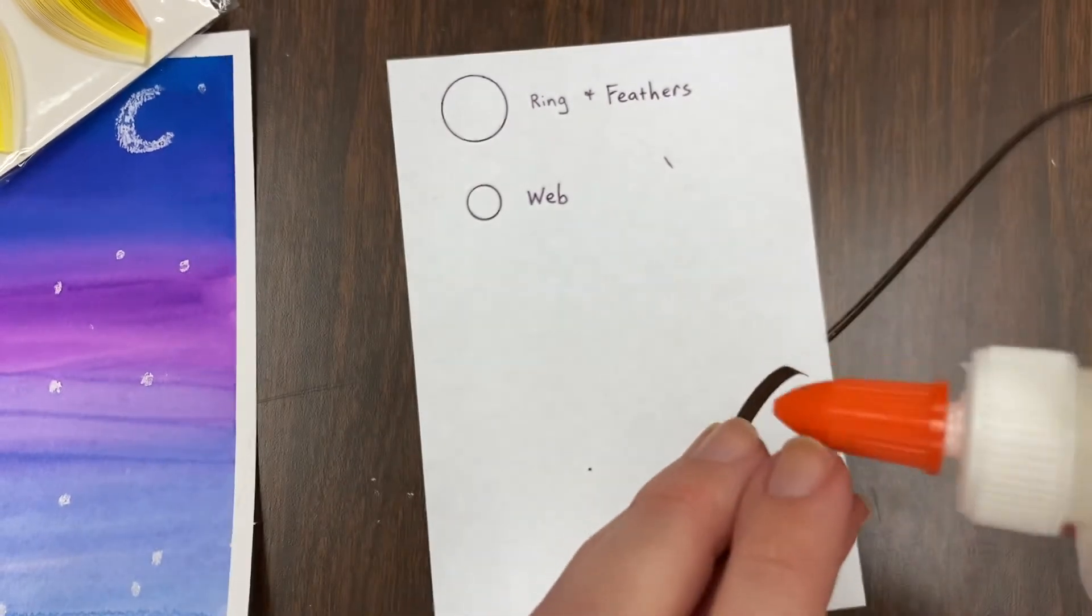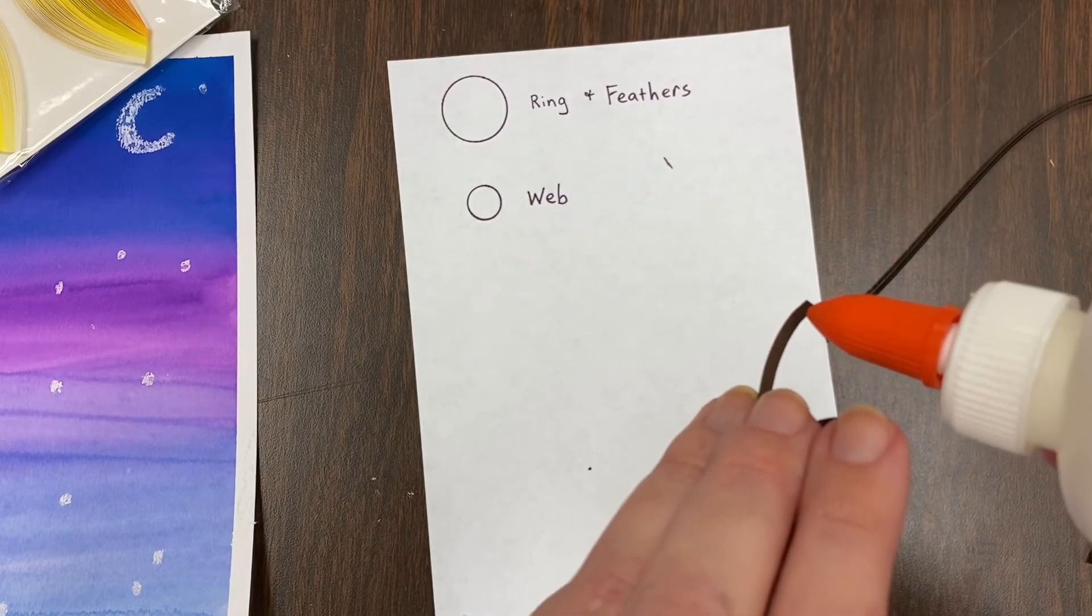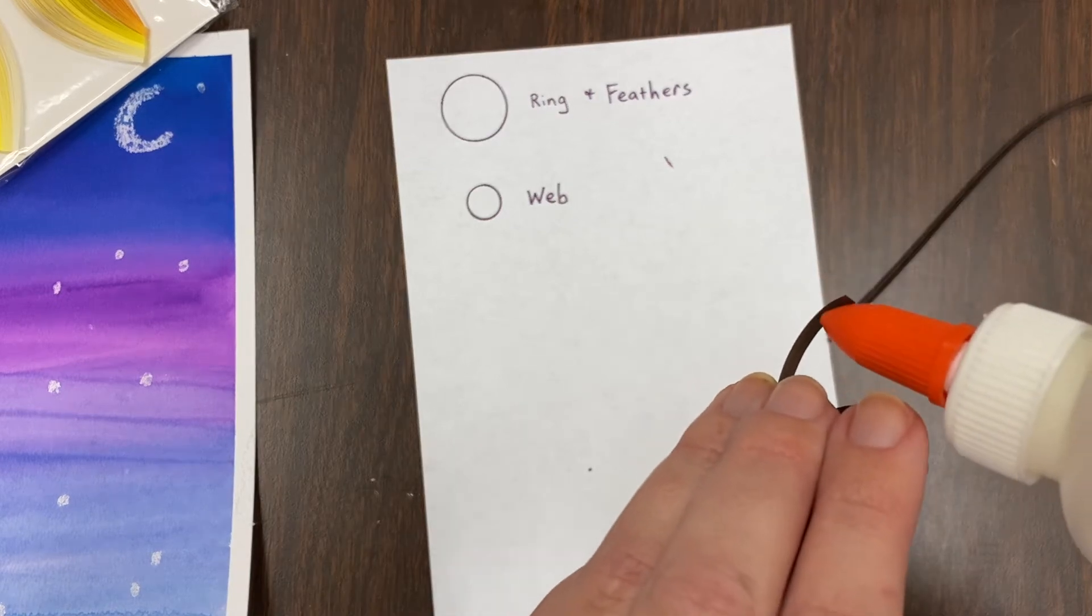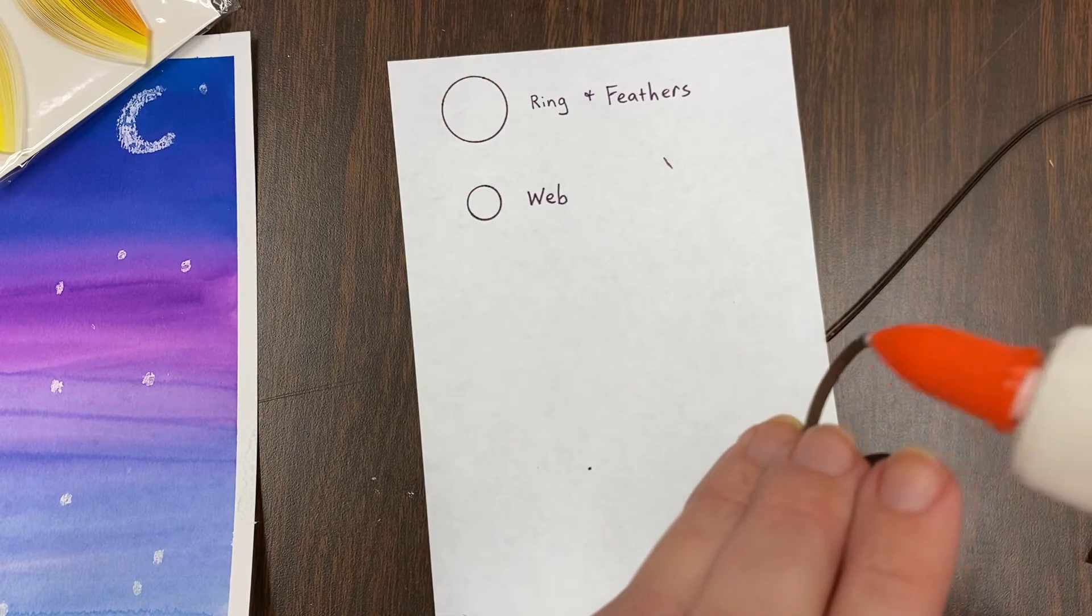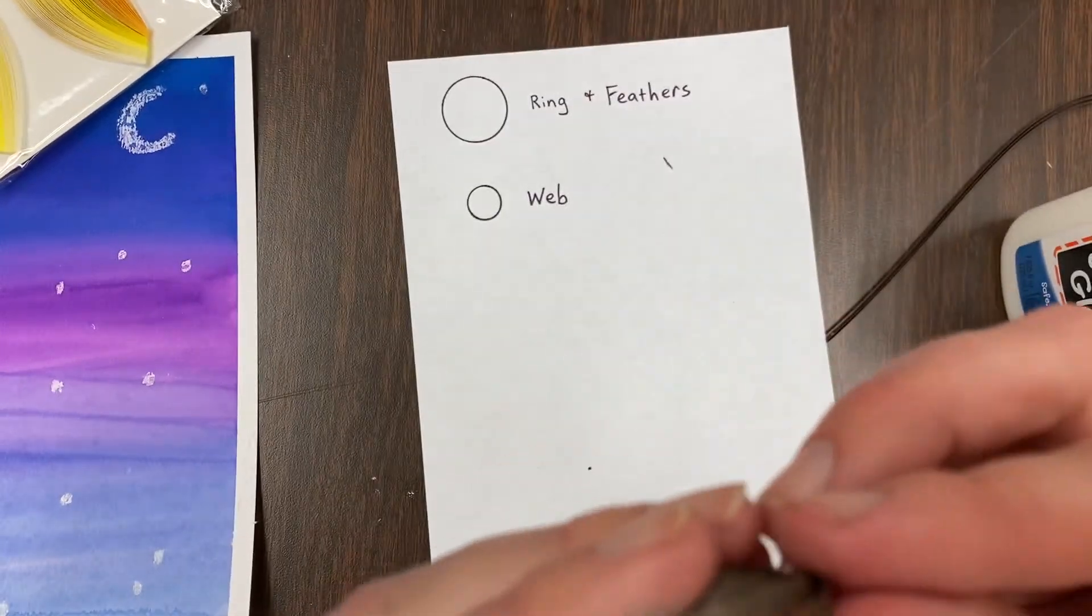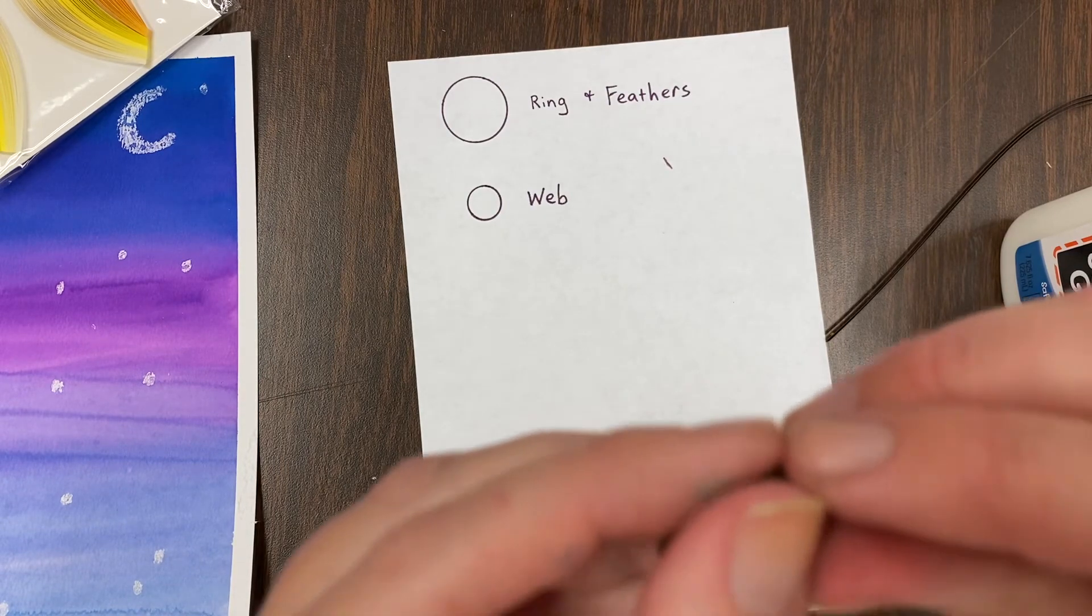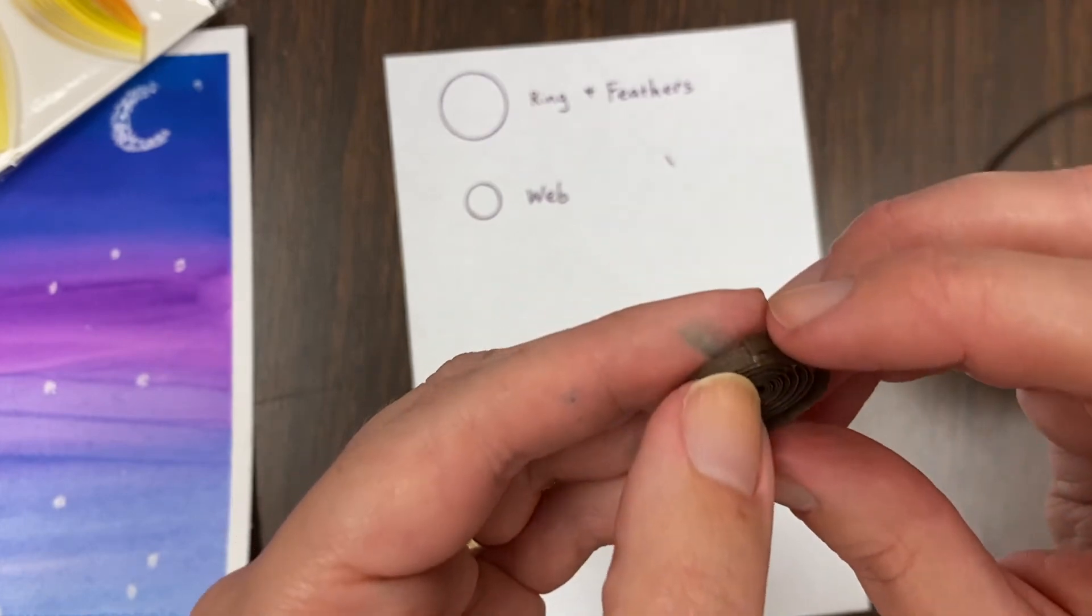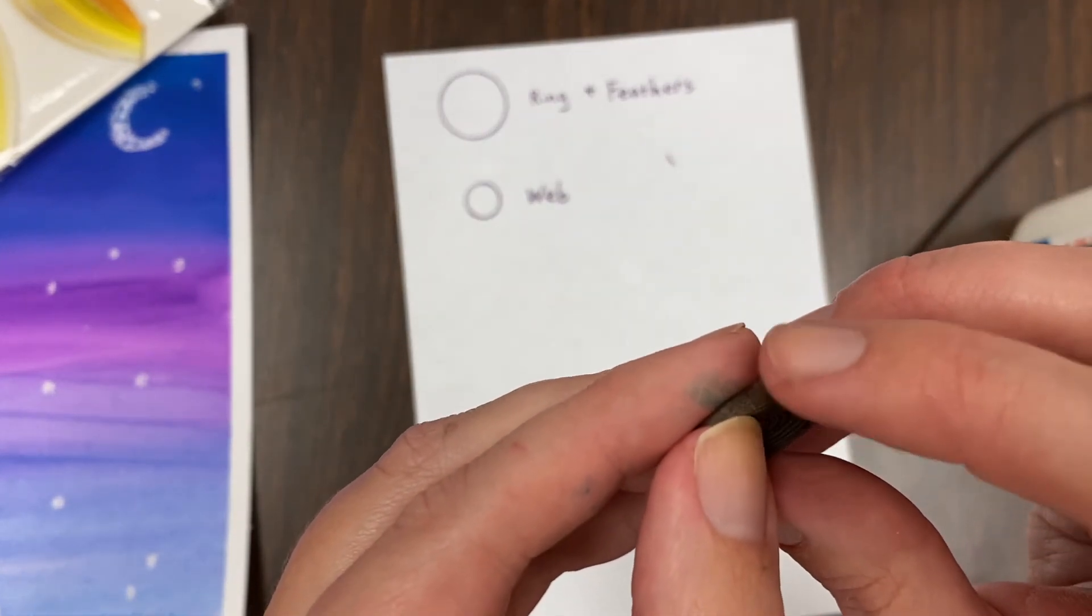And when I say a tiny bit of glue, I mean a very teeny tiny bit of glue. See how little that is? You just have to hold it in place for a short time because it's such a little bit of glue that it doesn't take very long for it to dry.